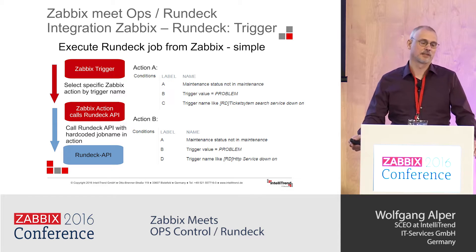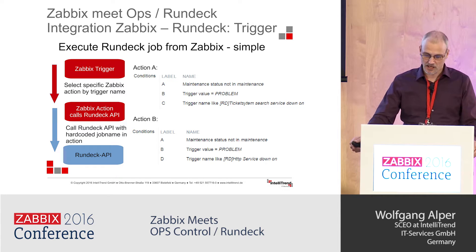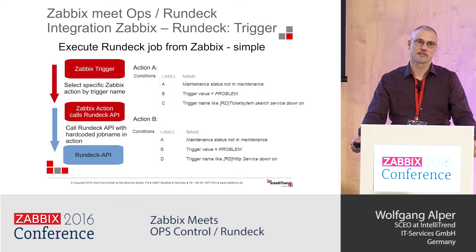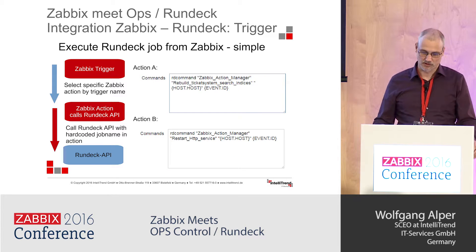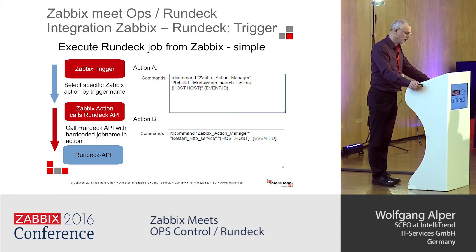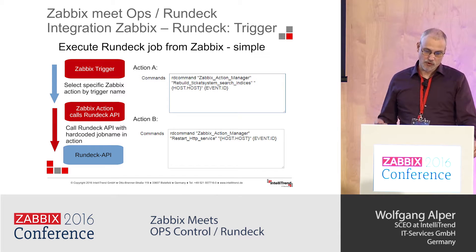The trigger and action part is what we'd like to talk about next. Zabbix fires a trigger and this trigger selects a specific action by trigger name — that's the most simple approach. On the right-hand side you see Action A, which defines a filter with "trigger name like ticket system search service is down." If we have another action that should execute another Rundeck job, we need a different trigger name like "HTTP service down" and a different action. The remote command in Zabbix uses an RD command wrapper to execute the API call against Rundeck, passing the job name and the host as a macro.